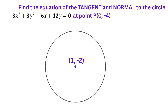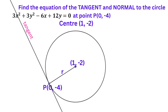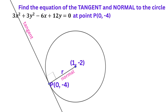Let's do a sketch of the problem. Here is the centre of the circle. The point P at (0, minus 4) lies on the circumference, and we can draw a radius from the centre to the point P. Let's draw the tangent. A tangent to a circle is a line that touches the circle at exactly one point — in this case, that point is P. Additionally, the tangent is perpendicular to the radius, which makes the radius a normal. The normal to a circle is a line segment that is at a right angle to the tangent line and passes through the centre of the circle. So the radius will always represent the normal.